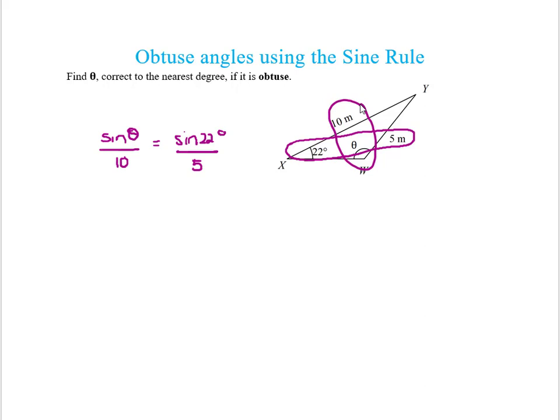So now I'm finding theta. I need to get rid of this 10, so I'm going to multiply both sides by 10, and so I end up with sine theta equals 10 sine 22 degrees over 5.